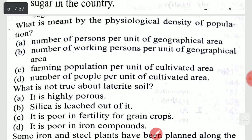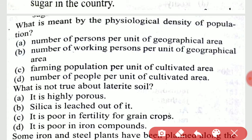What is meant by the physiological density of population? It is option C: farming population per unit of cultivated area.